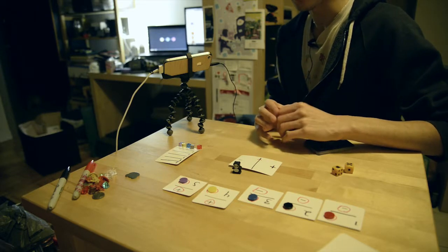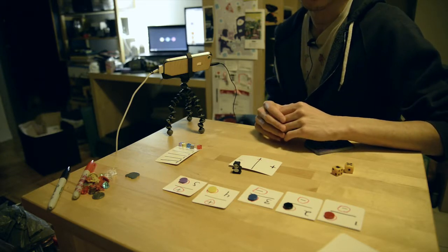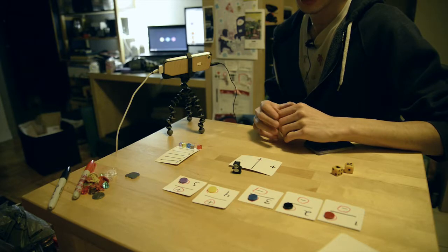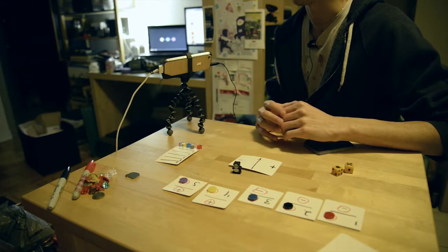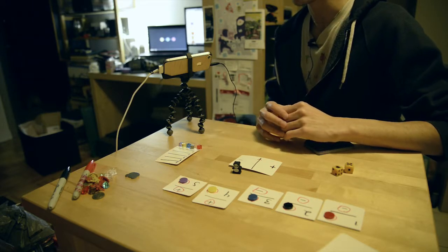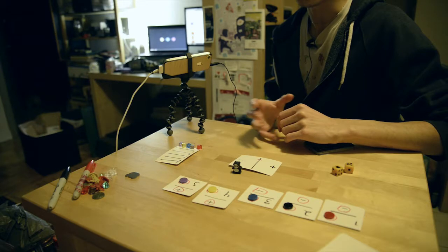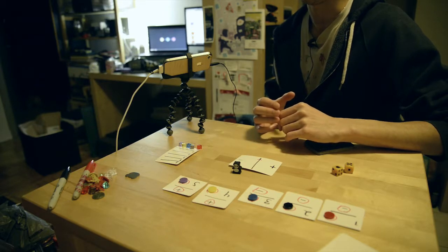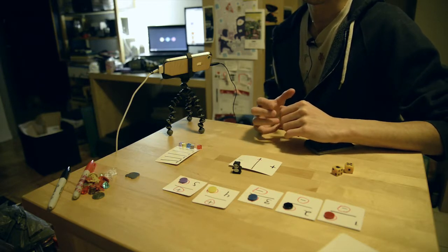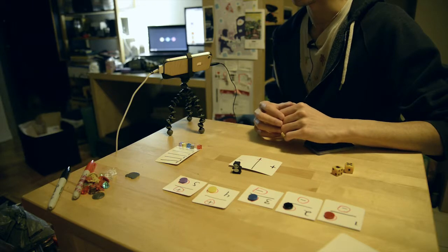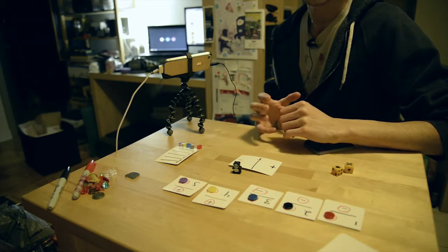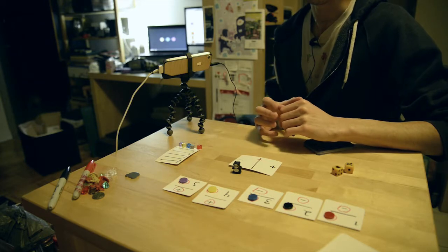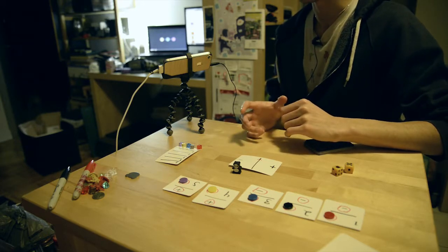My angle in this competition is to look at the components and really hash out some interesting mechanics instead of focusing on theme that much. Later on I'll paste on something that I feel is relevant to the mechanics that I've created. Since the components are so restrictive, I feel like this is the way to go instead of going with theme first and then trying to make a game out of it.